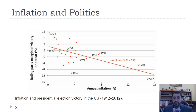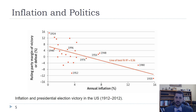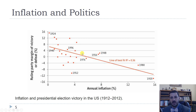Another reason policymakers dislike inflation is the relationship between inflation, measured on the horizontal axis, and how the ruling party does in presidential elections. There's a negative relationship — the lower inflation is, the better the ruling party does — giving the ruling party an incentive to keep inflation low. If inflation is kept at around 4% or less, the relationship becomes less clear and the ruling party tends to be safer.